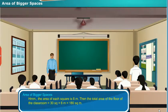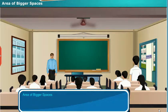Hmm, the area of each square is 6 meters. Then, the total area of the floor of the classroom equal to 30 square into 6 meters, which is equal to 180 square meters. Absolutely correct. Thank you, sir.